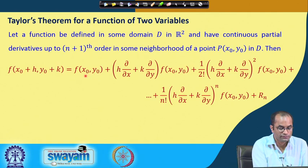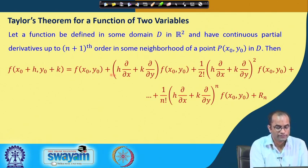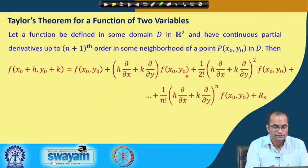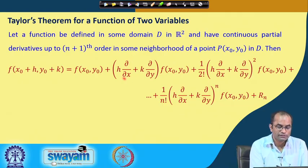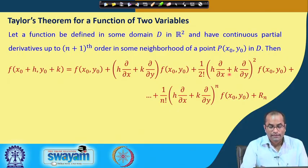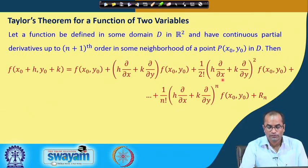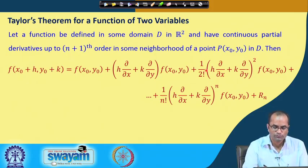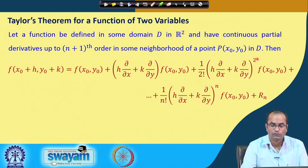We have f(x₀, y₀), then the first-order terms: h times the partial derivative with respect to x plus k times the partial derivative with respect to y, evaluated at (x₀, y₀). Then 1/factorial terms similar to the single-variable case, followed by higher-order terms involving the operator h(∂/∂x) + k(∂/∂y) applied to f.